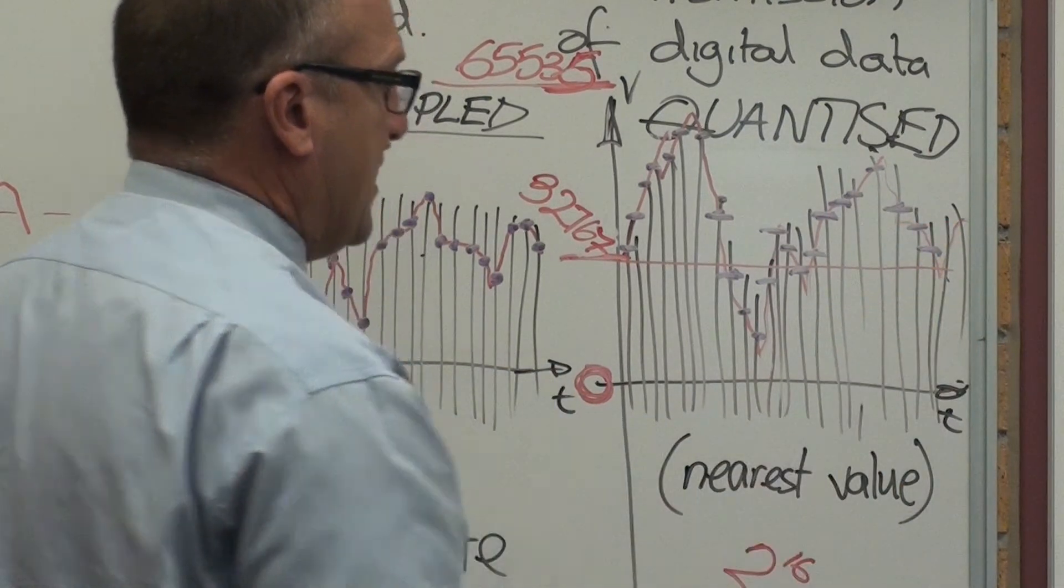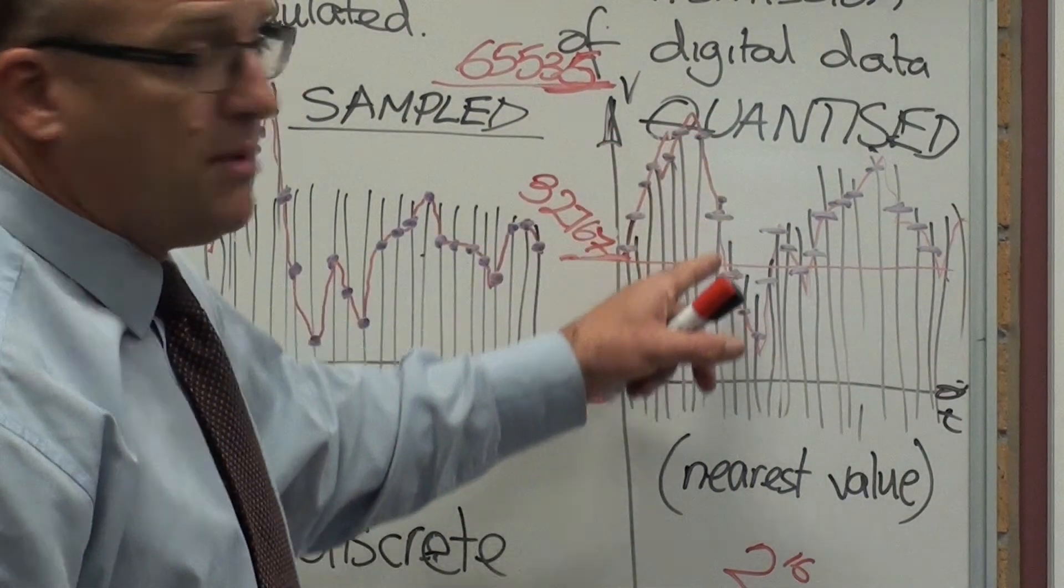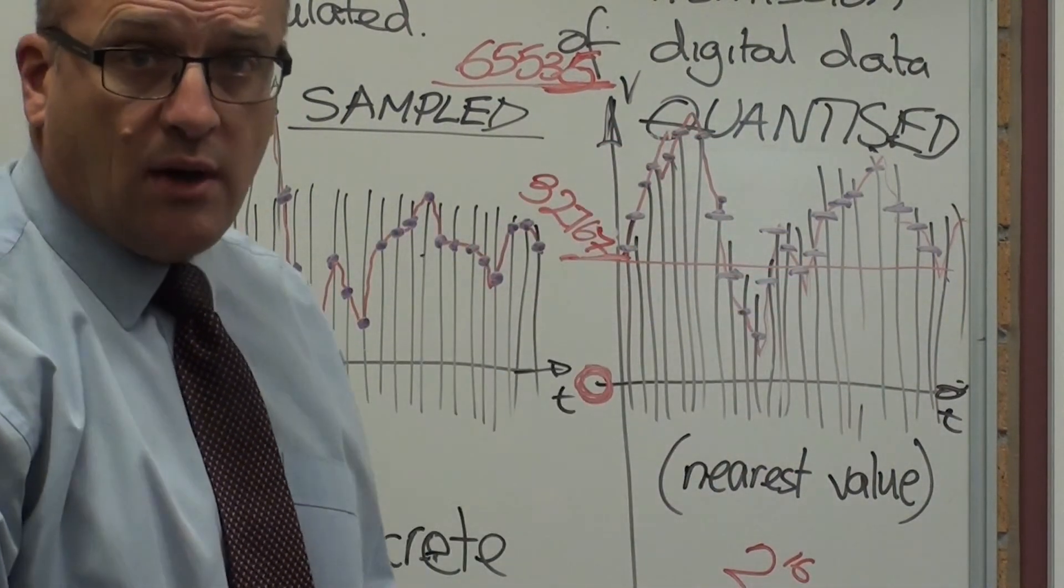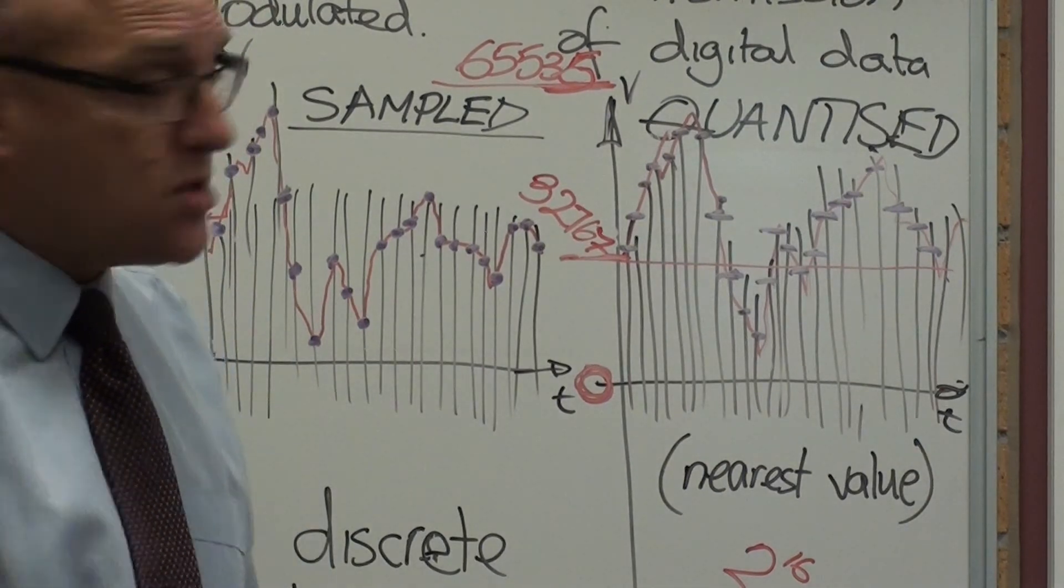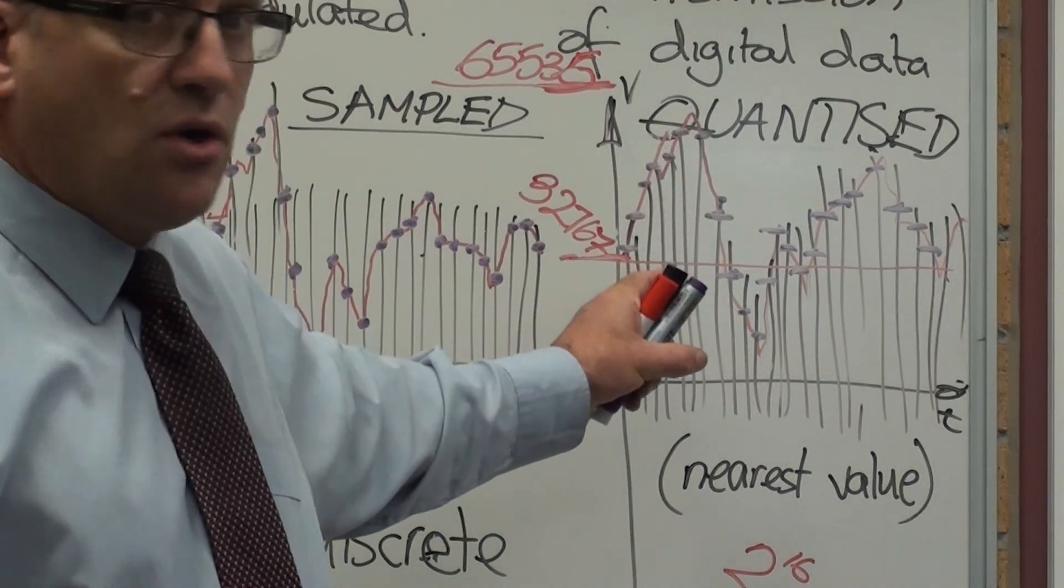Missed that point there. So now I have converted that to being whole numbers. Now I've got whole numbers. Let's now look at the second part. That's how data is converted to digital.